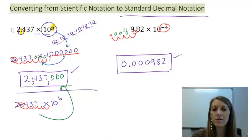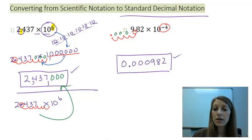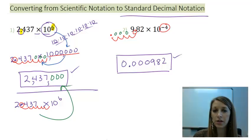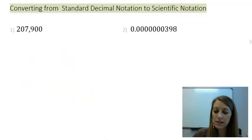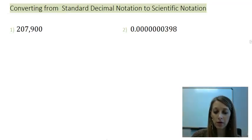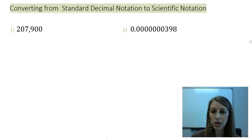In those two examples, we went from scientific notation to standard decimal notation, or just normal numbers. In this next set of examples, we're going the other way around — starting with normal numbers, or standard decimal notation, and converting to scientific notation.